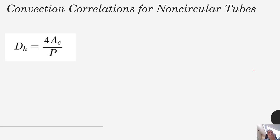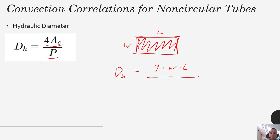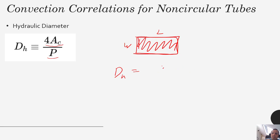We've talked mostly about circular tubes and channels, which is what most pipes are. But there may be non-circular tubes, and in those cases we use the hydraulic diameter. The hydraulic diameter is calculated as four times the cross-sectional area divided by the wetted perimeter. For example, for a rectangular channel of width W and height L, it would be four times W times L divided by two W plus two L.